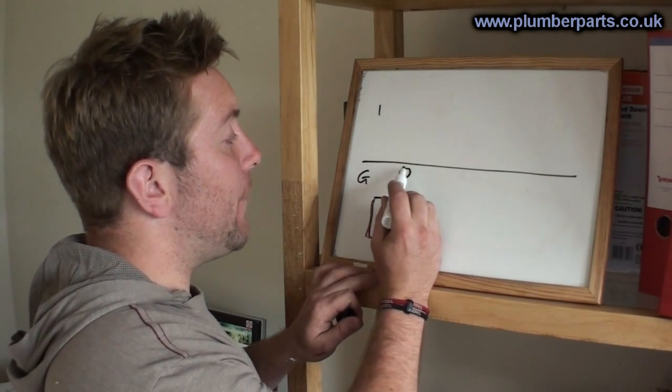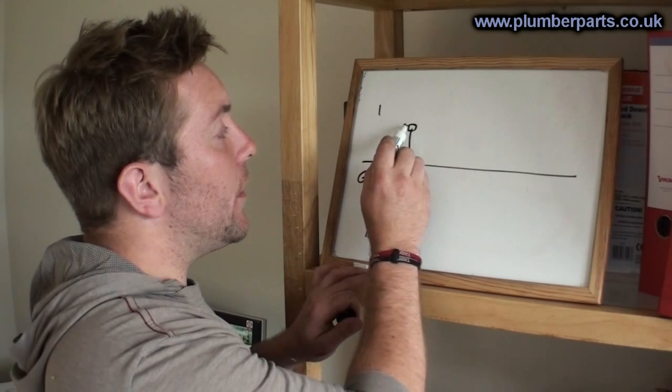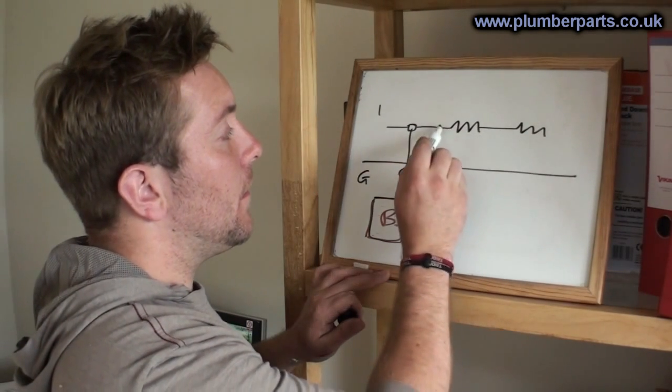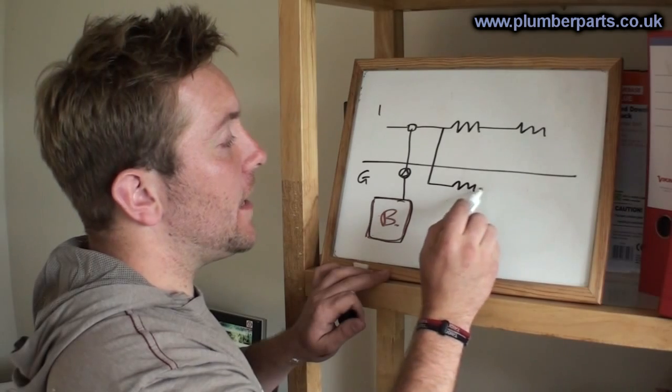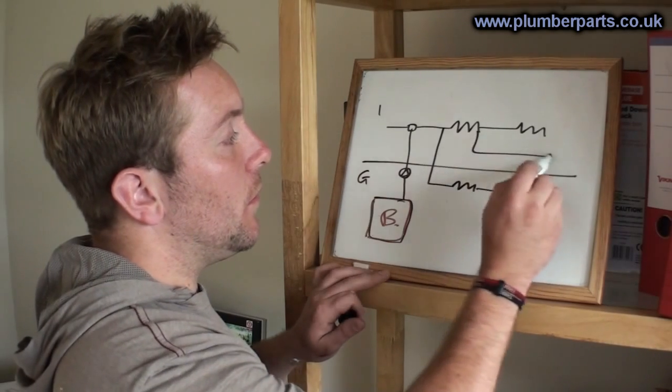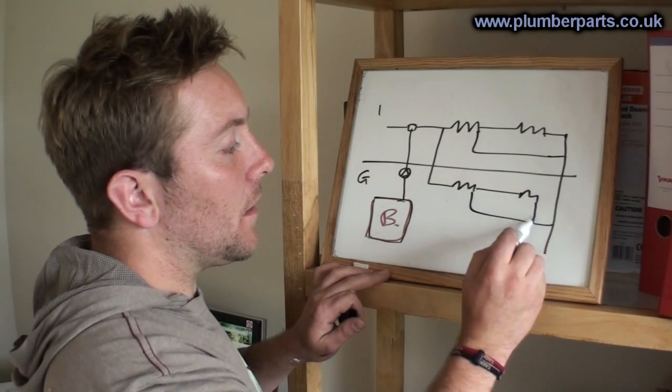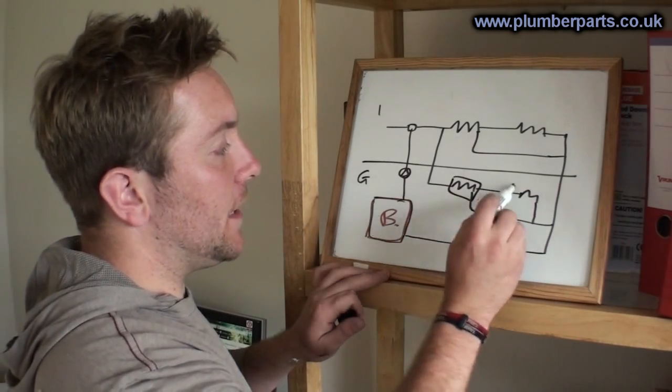Coming out of the boiler, we have a pump that goes up, through a diverter valve, through some radiators upstairs, and then downstairs, with common returns going back to the boiler. Okay, so we've got radiators here.